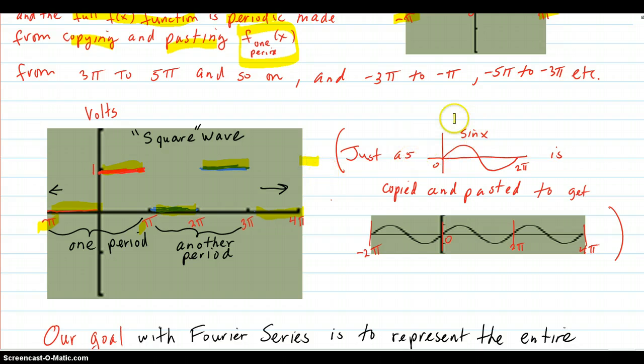Just as if you had a sine curve from zero to 2 pi and you copied and pasted that. Here's your original. You copy and paste that 2 pi to 4 pi and before it like this. So you would get a full sine curve from this one little snippet.